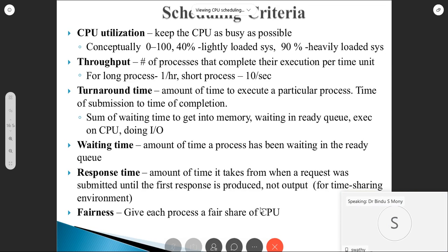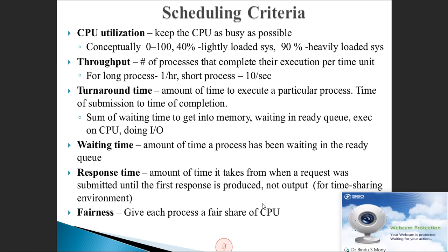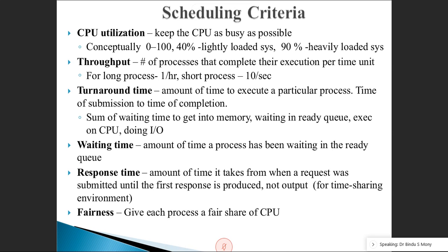In the last session we covered the basic concepts of scheduling and CPU scheduling. Now we'll see what the scheduling criteria are. Different CPU scheduling algorithms have different properties, and choosing a particular algorithm is very important because in different contexts or with different types of processes, the selection of the CPU scheduling algorithm matters. To choose the algorithm in a particular situation, we must consider some criteria.